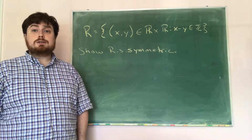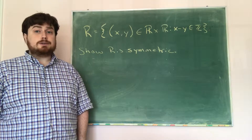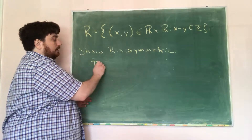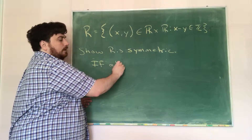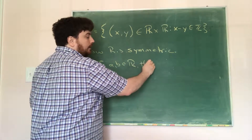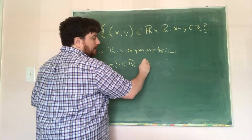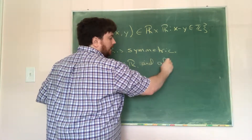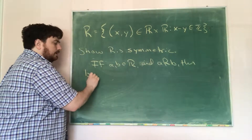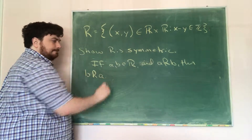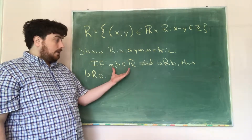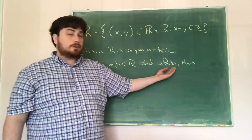To show r is a symmetric relation, we have to show that if a and b are elements of the real numbers and a is related to b, then b is related to a. So we get to assume that a and b are both real numbers and a is related to b, and we need to get out that b is related to a.